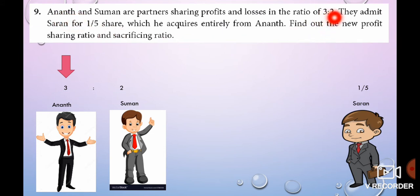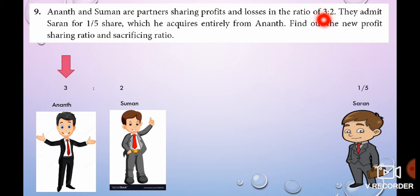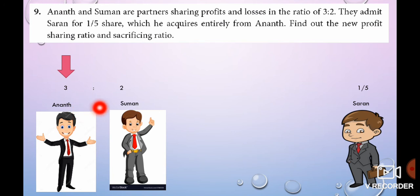Old ratio is 3 is to 2, so Anandhan is 3 by 5, Suman is 2 by 5. Saran takes 1 by 5 from Anandhan. So, Anandhan's new share is 3 by 5 minus 1 by 5 equals 2 by 5. The new profit sharing ratio is 2 by 5, 2 by 5, 1 by 5. That is, 2 is to 2 is to 1.